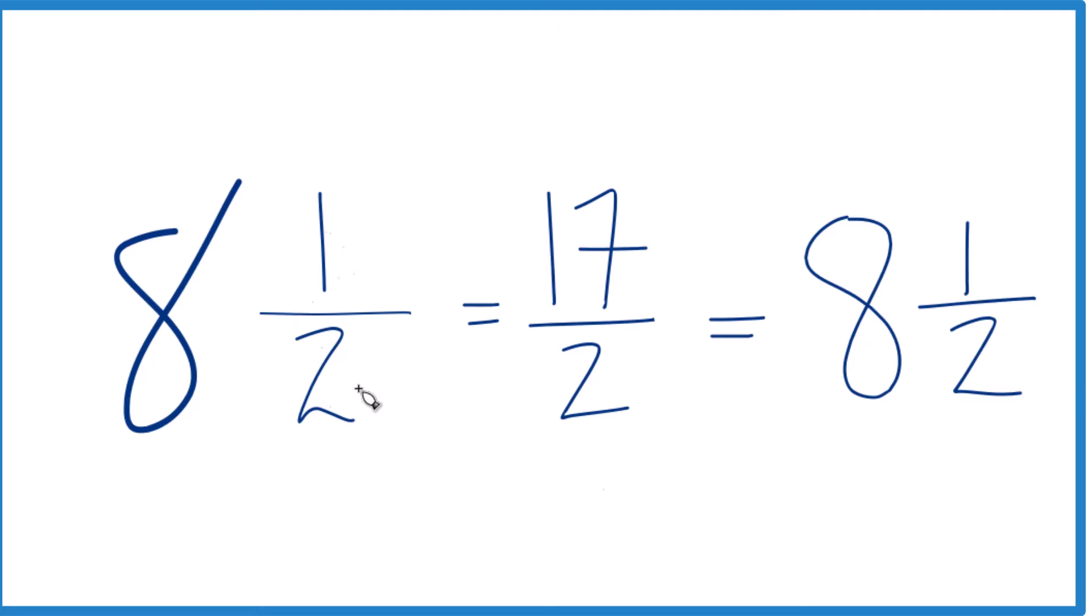And these have the same value. 8 and 1 half, that equals 17 halves. They have the same value, it's just that we've represented this here as an improper fraction. This is Dr. V, thanks for watching.